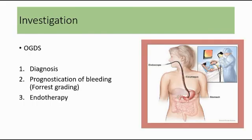For investigation of peptic ulcer disease, we can do OGDS — esophagogastroduodenoscopy — where the endoscope is inserted and reaches into the stomach. OGDS can be done for diagnostic purposes: to confirm there is an ulcer, look at the location of the ulcer, do a biopsy to rule out malignancy — usually the surgeon will take 6 bites for biopsy — and also biopsy of the antral tissue for campylobacter-like organism testing to test for H. pylori.